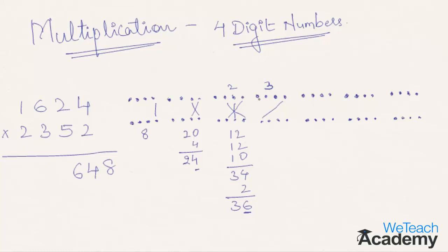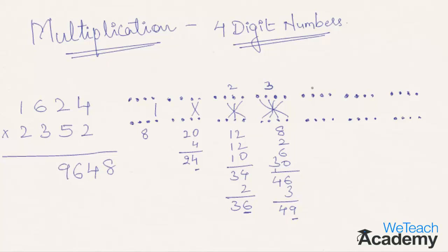In the fourth step, you need to multiply diagonally. First 4 into 2 is 8, then 2 into 1 is 2, 6 into 5 is 30, and 3 into 2 is 6. So 8 plus 2 plus 6 plus 30 gives 46, plus the earlier carry of 3, so 46 plus 3 is 49. Now 9 is taken to the final result and 4 is carried to the next step.